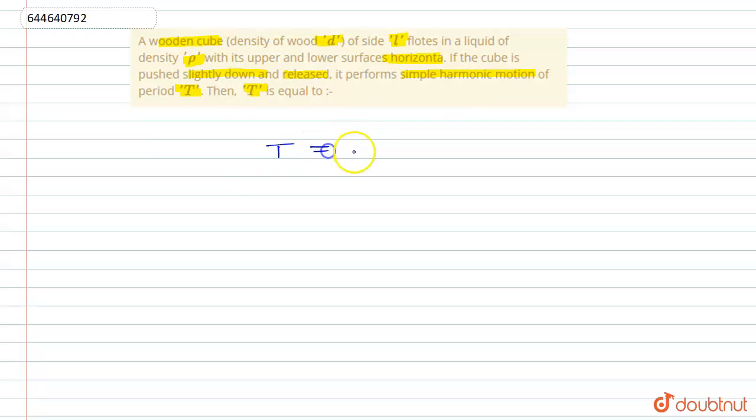The mass of the block is volume times the density of the block, which is d. So we get mass as l³d. The area of this block is l². Now we put the values of mass and area into the equation.